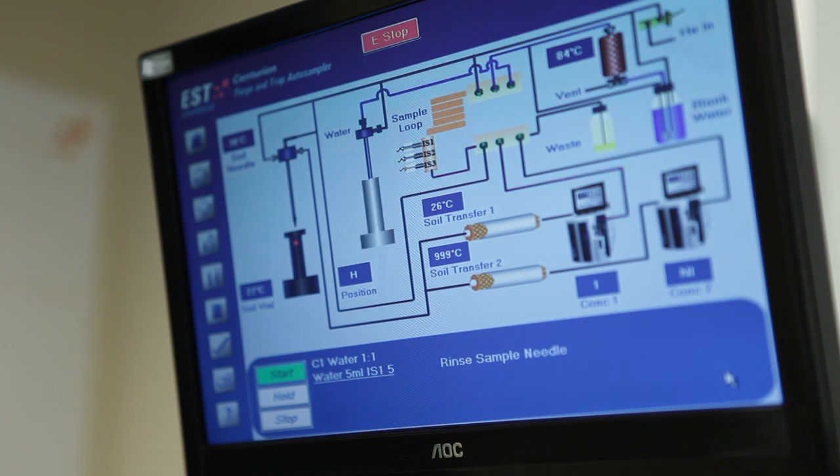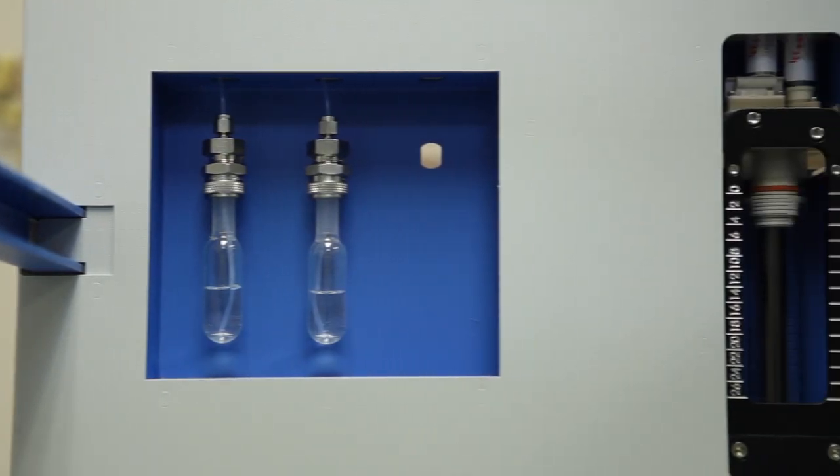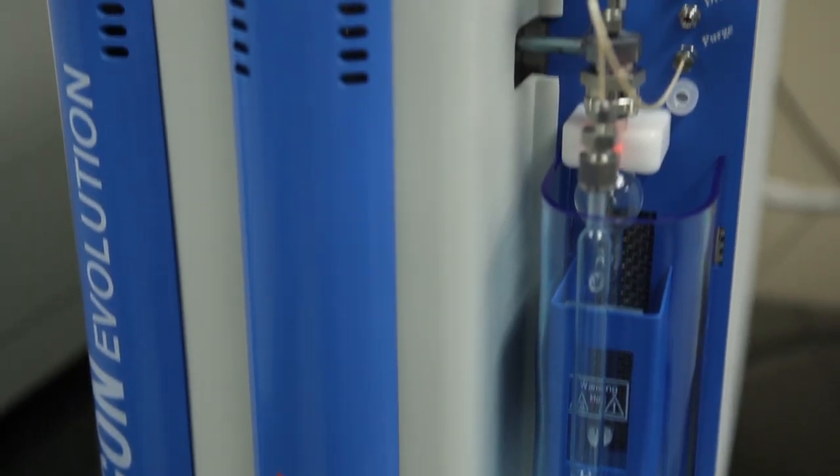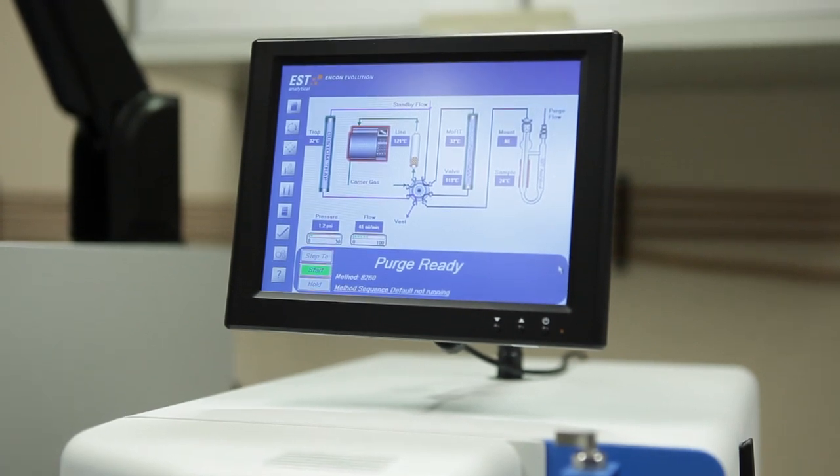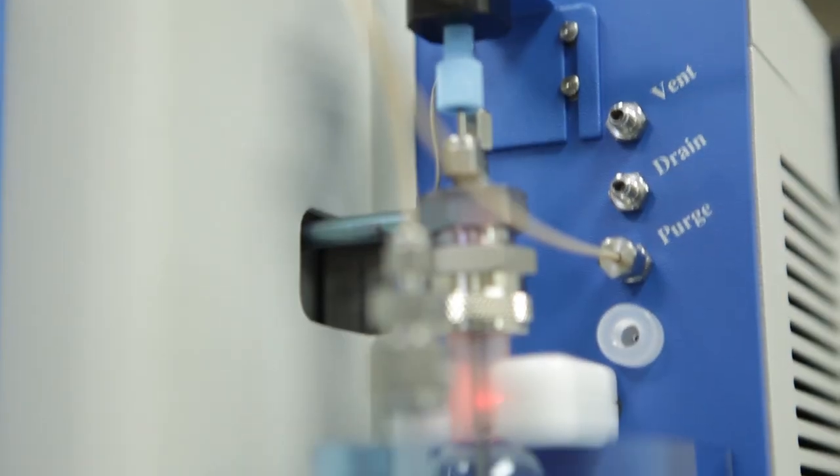Units are shipped with a 5 microliter addition but this can be varied. Water samples are transferred to the ENCON concentrator where they are purged per the EPA method. Moisture removal takes place during purge in the moisture reduction trap which is before the sorbent trap.